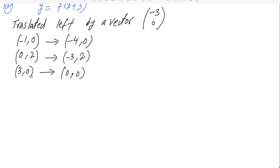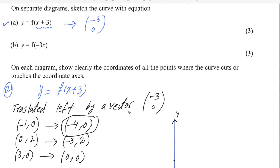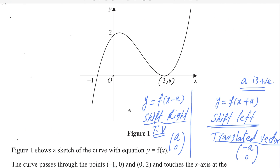Draw the coordinate axes — the y-axis and x-axis. Mark some values: 1, 2, 3, 4 on the positive x-axis, and 1, 2 on the positive y-axis. The point (-4, 0) is here on the negative x-axis. The graph shape will be the same, but transformed to the left side, because it shifts left according to the given function.